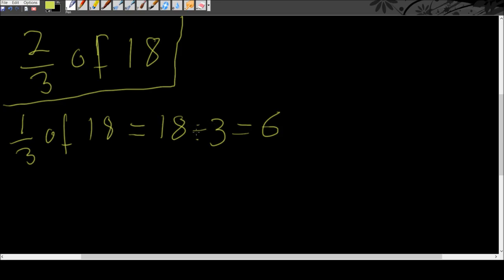We've basically split 18 into three equal parts, and one of those parts is 6. Now we're trying to find two-thirds of 18. We know one-third is equal to 6, so in order to find two-thirds, all we need to do is multiply the one-third by 2.